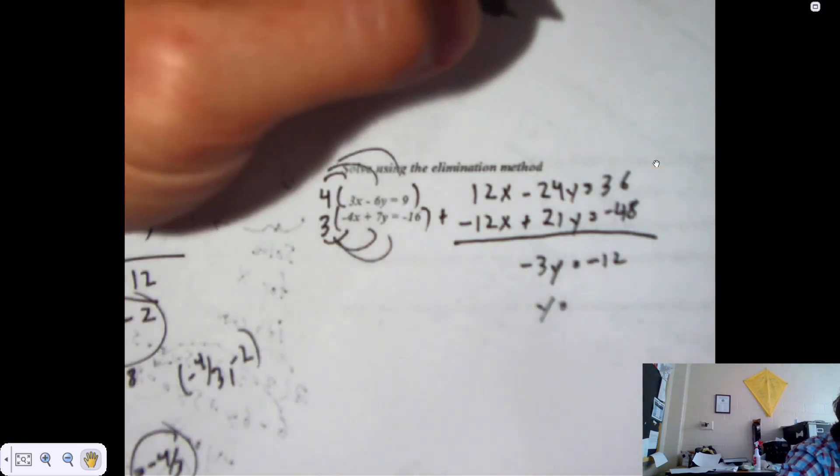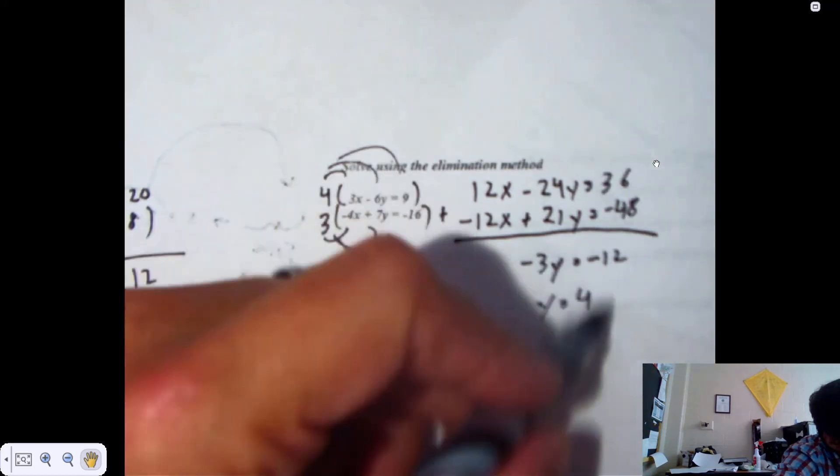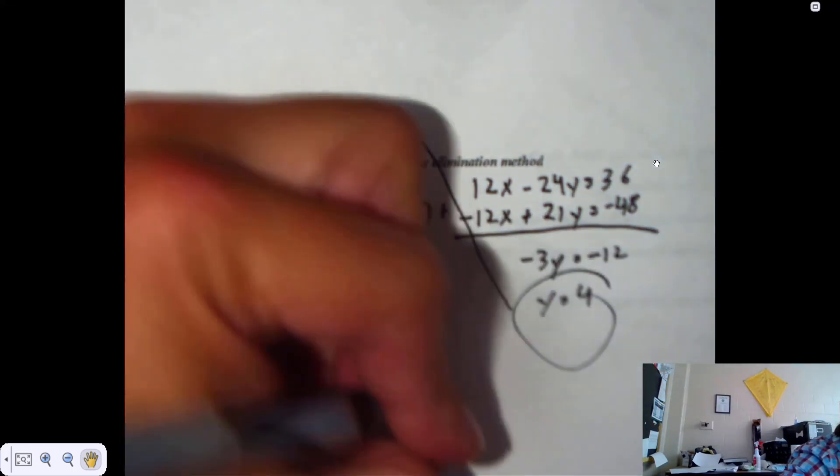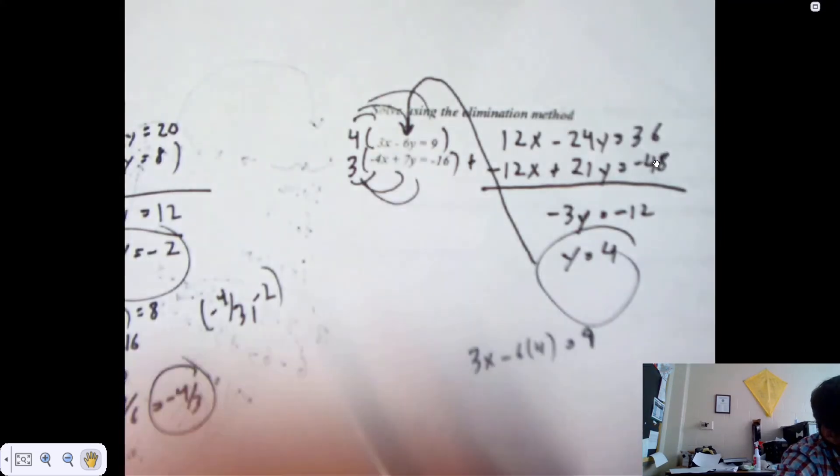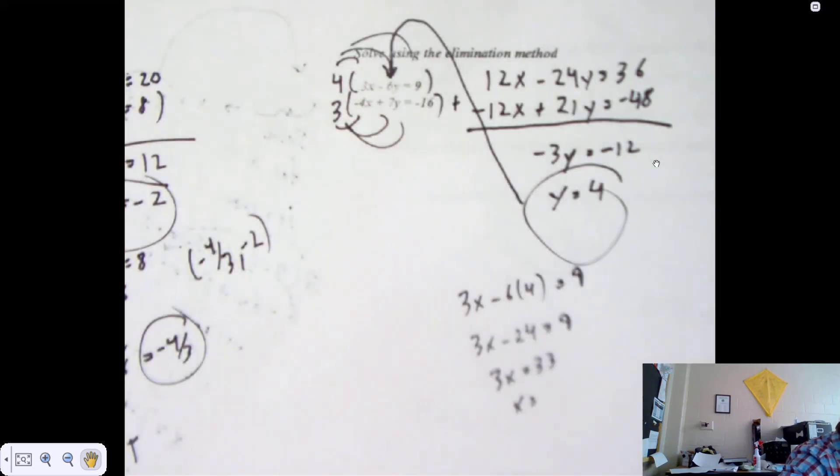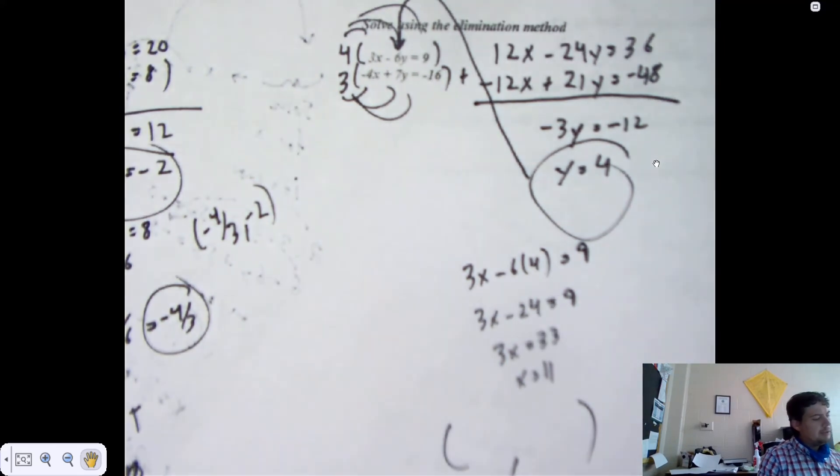Then I reckon we'll take that Y value and we'll plug it in somewhere. I'm going to go for the top equation. It looks easier to me. So 3X minus 6 times 4 must be 9. I reckon that's 24 there. You can add 24 to 9 or subtract 24 from 9. Add it. It's 9 plus 24. 33. What's our X value? 11. Please give your answers as ordered pairs. Because this goes back to graphing. The first thing we did on solving systems was graph. It goes back to graphing. So what's your ordered pair? 11, 4.